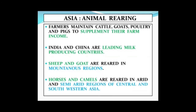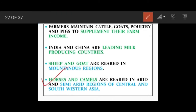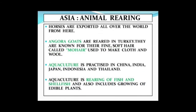After agriculture we come to animal rearing. Farmers maintain cattle, goat, poultry and pigs to supplement their farm income. India and China are the leading milk-producing countries in Asia. Sheep and goat are reared in mountainous areas where there is plenty of green grass. Horses and camels are reared in the arid and semi-dry areas of central Asia, and these horses are exported all over the world and are in huge demand.